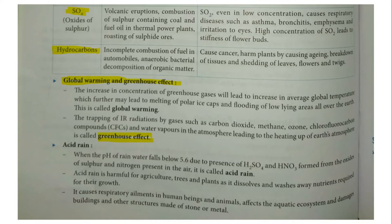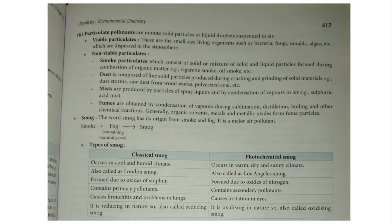Acid rain has a pH less than 5.6 levels.